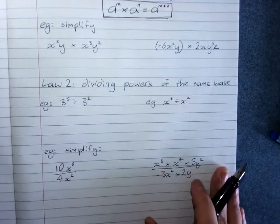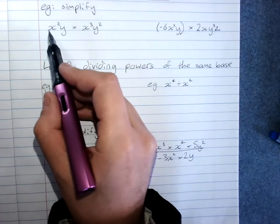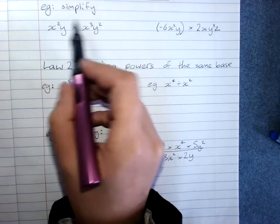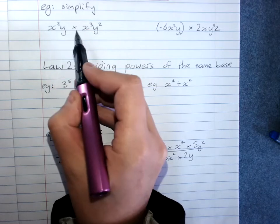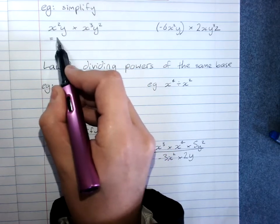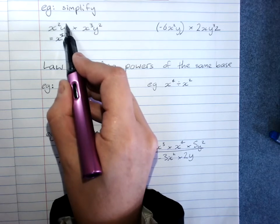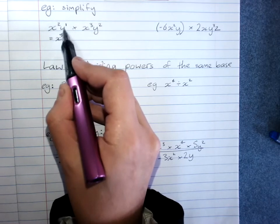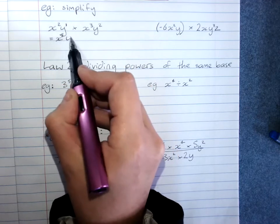So if we are asked to simplify an algebraic expression, I've got some trickier ones here than our examples. x squared times x cubed is x to the power of 5. y, if there's no power it's 1. Anything to the power of 1 is just itself. y1 times y2 is y to the power of 3.